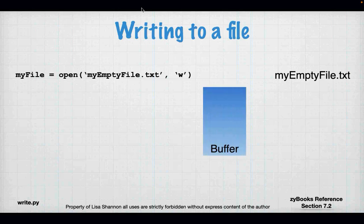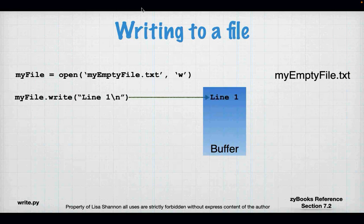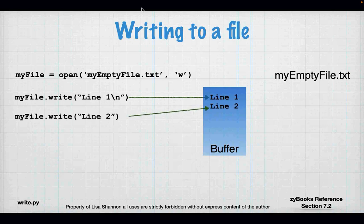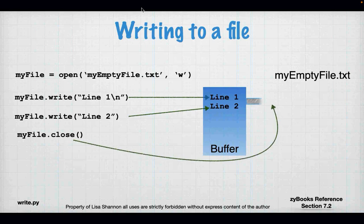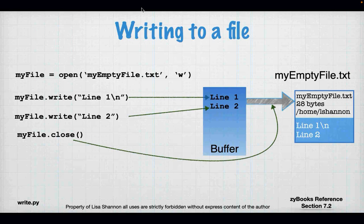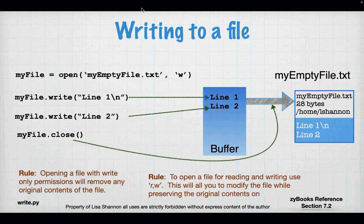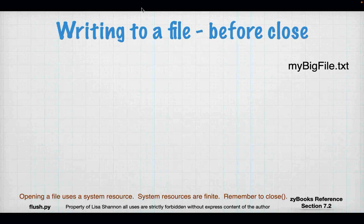Writing to a file. I'm going to open myemptyfile.txt for writing — that's what the W means. Now I'm going to write line one. You'll notice there's a buffer — that's because it hasn't written to disk yet. Then I write line two, and I can write as many lines as I want. When I close, I actually write it to the hard drive — I do that expensive write operation on close. To open a file for reading and writing, use 'r+w'.